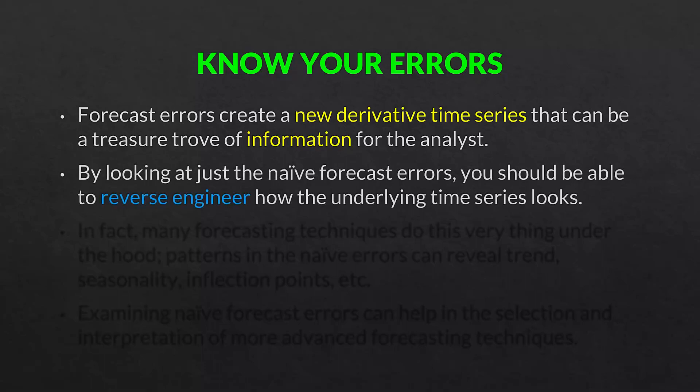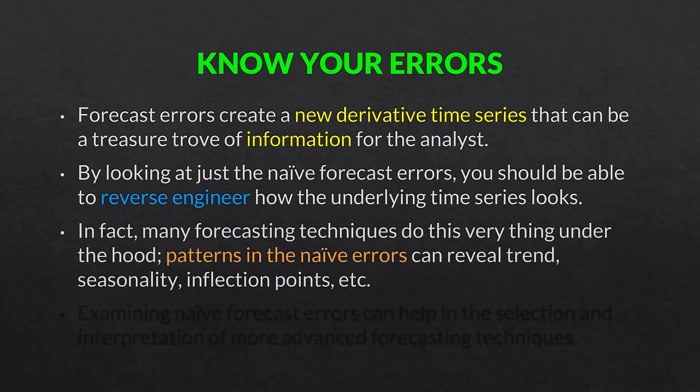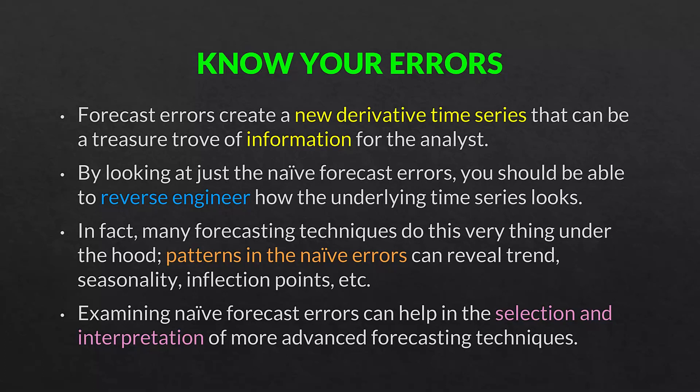By looking at just the naive forecast errors, you should be able to reverse engineer how the underlying time series looks. Many forecasting techniques do this very thing under the hood. Patterns in the naive forecast errors can reveal trend, seasonality, inflection points, and all sorts of information about the underlying time series. Examining naive forecast errors can also help in the selection and interpretation of more advanced forecasting techniques. Time series forecasting involves selecting a forecast technique and then different ways for measuring the errors of those forecasts.